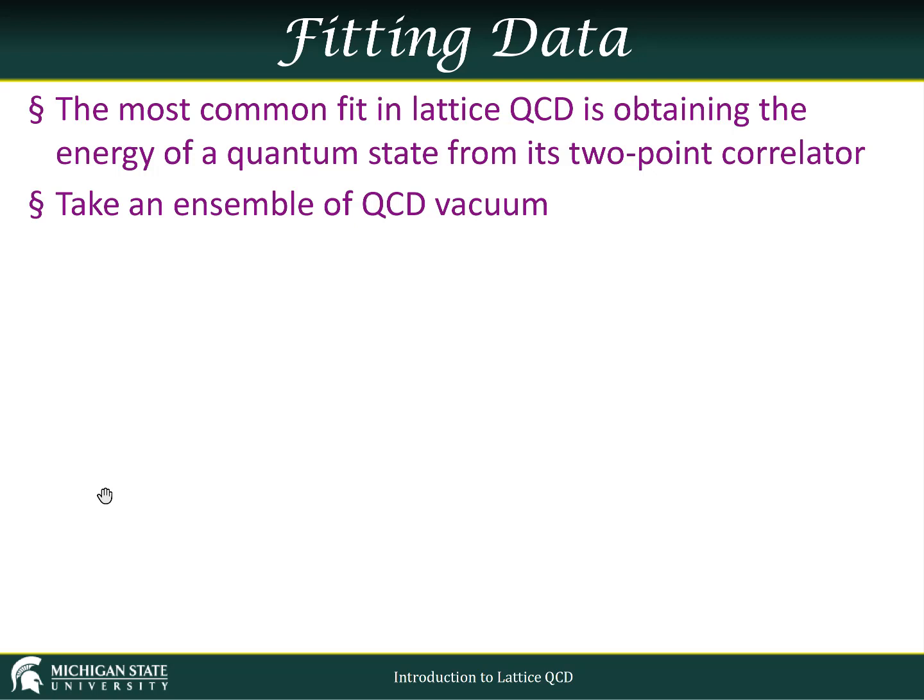So what are we going to do with these observables once we have them? The most common thing that we want to do is we have some correlator, a two-point correlator, a three-point correlator, and we know from QCD, from theory, what we expect the form of that data to be. We might not know the exact values, but we know basically what we expect the shape to be. It's a sum over exponentials, for example.